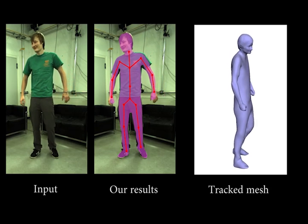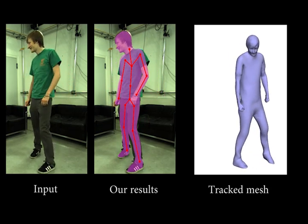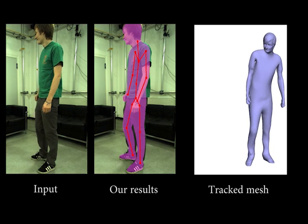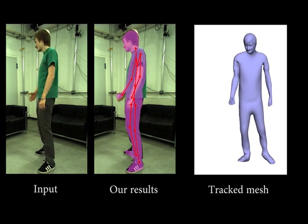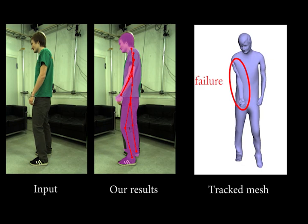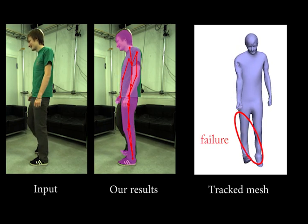We highlight the failure case of our method. Here, one side of the actor turns away from the stereo rig, leading to an erroneous tracking result for the occluded limbs. This can be seen in the visualized mesh on the right.